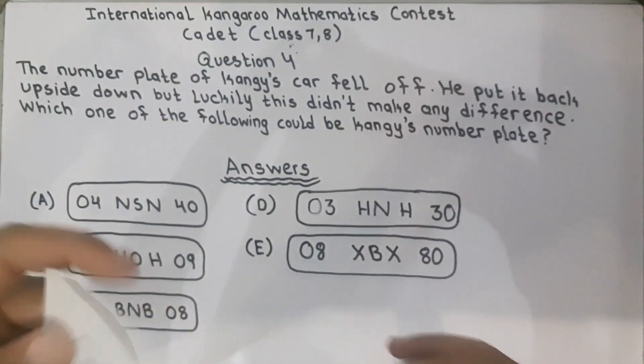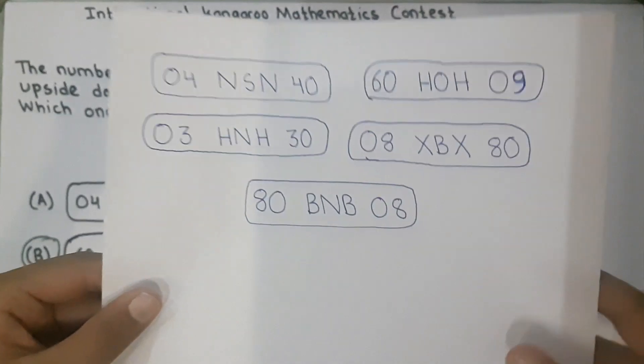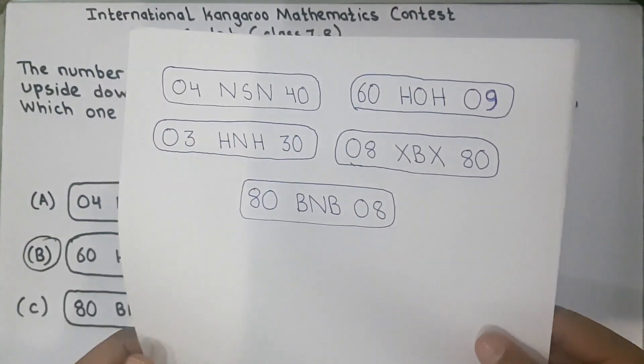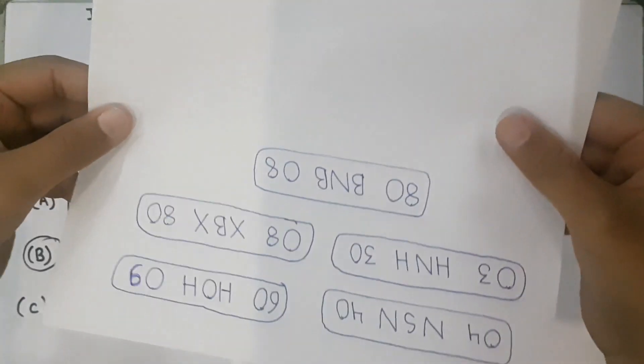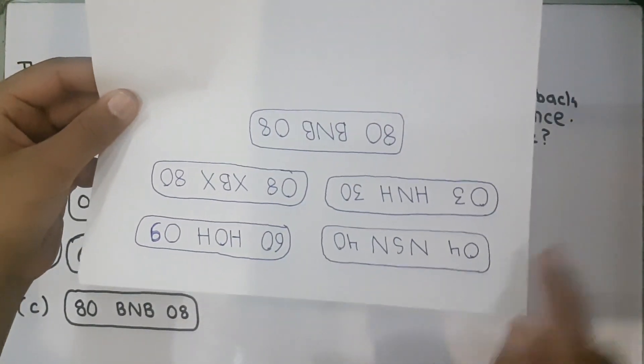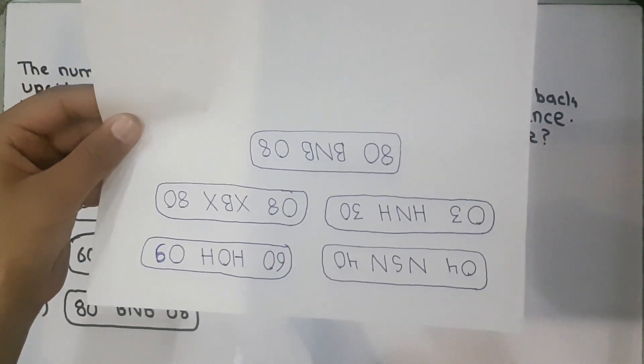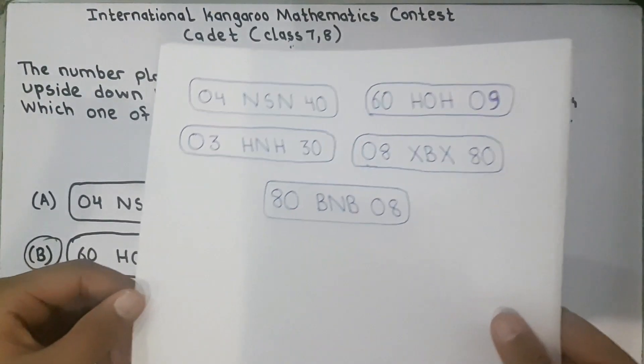Look. 04 NSN 40. And this is showing that 4 upside down. This is not the correct option. So we will try another.